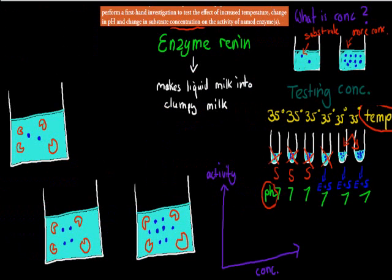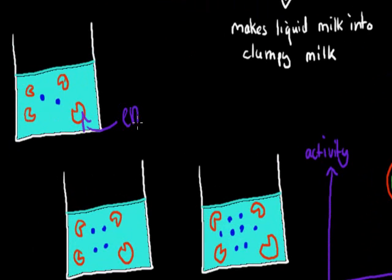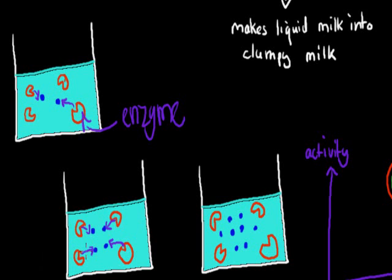I want to explain why two test tubes — one with more concentration than the other — give a similar result in enzyme activity, while the tube with very little substrate shows a different result. Here we have three test tubes: one with two substrates, one with four, and one with many more. In test tube one, we have four enzymes but only two substrates. Two enzymes are busy breaking down substrates, but two have nothing to do. In test tube two, with four substrates and four enzymes, all enzymes are occupied — each one breaks down one substrate. So now they're all busy and active.